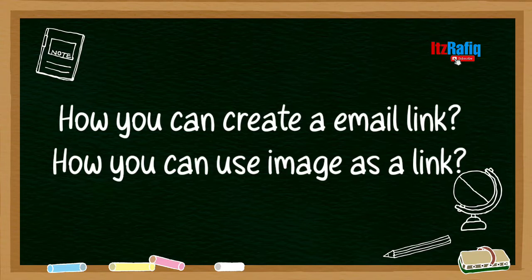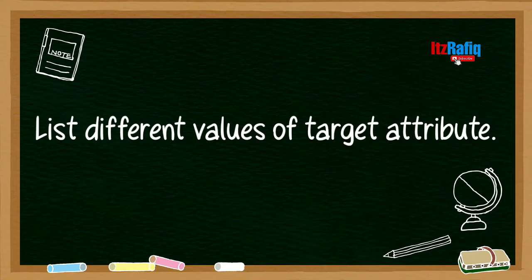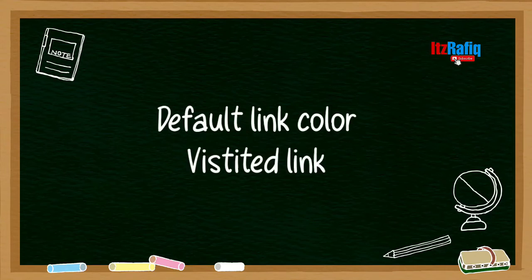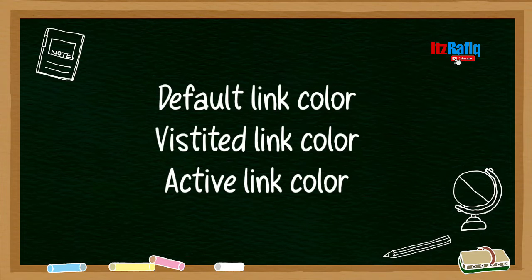Which tag is used to create a hyperlink? It is anchor tag or A tag. And what are the different values that you can apply in target attribute? Blank, parent, self, and top. By default, link opens in which window? You can write current window. And these three are more important - default link color it is blue, visited link color it is purple, active link color it is red.